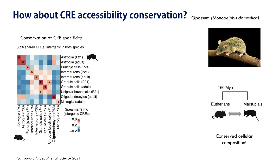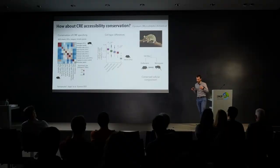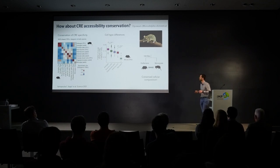We found that corresponding cell types consistently showed the highest similarity in their chromatin accessibility profiles between the two species, even for intergenic CREs, which are known to evolve rapidly — so the cell-type specificity of conserved CREs stays quite stable. Going back to differences between cell types: when we ask what fraction of mouse CREs are also found in the opossum, we again see that astrocytes have the highest conservation in the cerebellum, and microglia are diverging significantly faster.